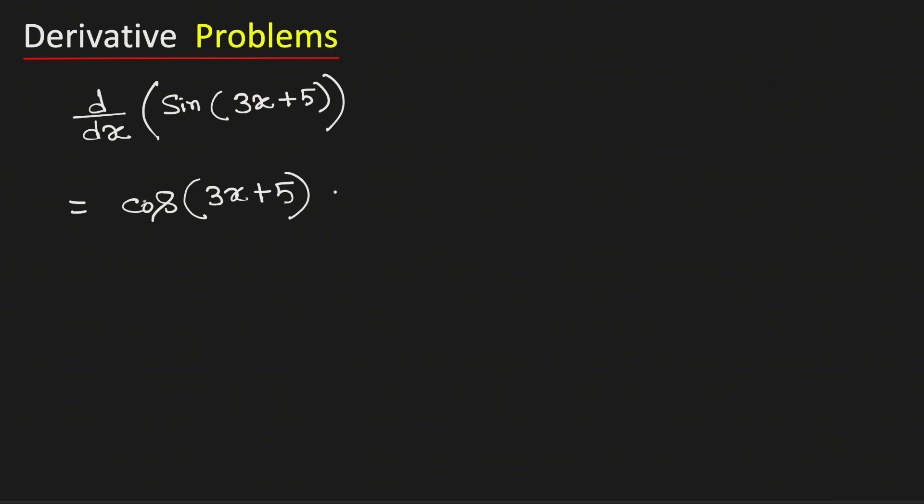And we need to multiply this with the derivative of the inside function which is 3x plus 5. That is, we need to write d/dx of 3x plus 5 here. And this is obtained by the chain rule of differentiation.